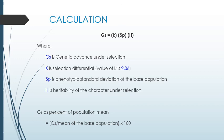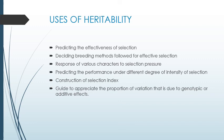Uses of heritability: heritability refers to how much of a character passes from the parent to the progeny. It helps us in predicting the effectiveness of selection — whether our selection is good or bad — and whether the character responds to selection pressure. It helps in determining the breeding value of a plant, predicting the performance of the character under continuous selection, constructing the selection index, and identifying the portion of variation that is due to genotypic or additive effects.